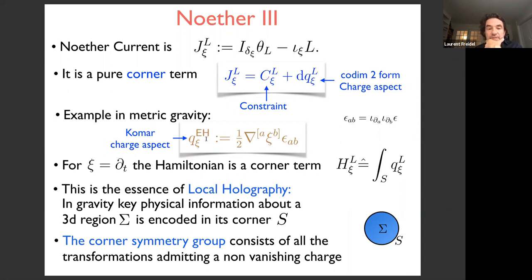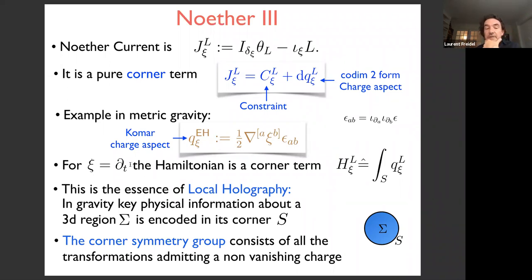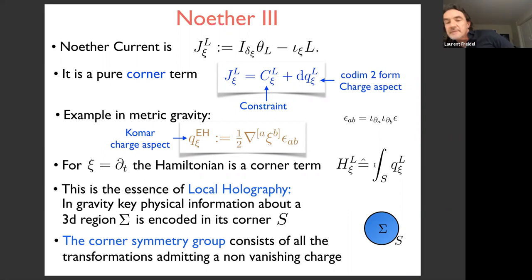In metric gravity, for the diffeomorphism generated by vector field xi, the charge aspect is the Komar charge aspect — essentially the antisymmetric derivative of the vector field times the co-dimension two volume form. The charge associated with the time evolution vector field is the Hamiltonian that generates time evolution. Noether's theorem tells us that the Hamiltonian is a corner term — there is no bulk contribution; the bulk is a pure constraint.